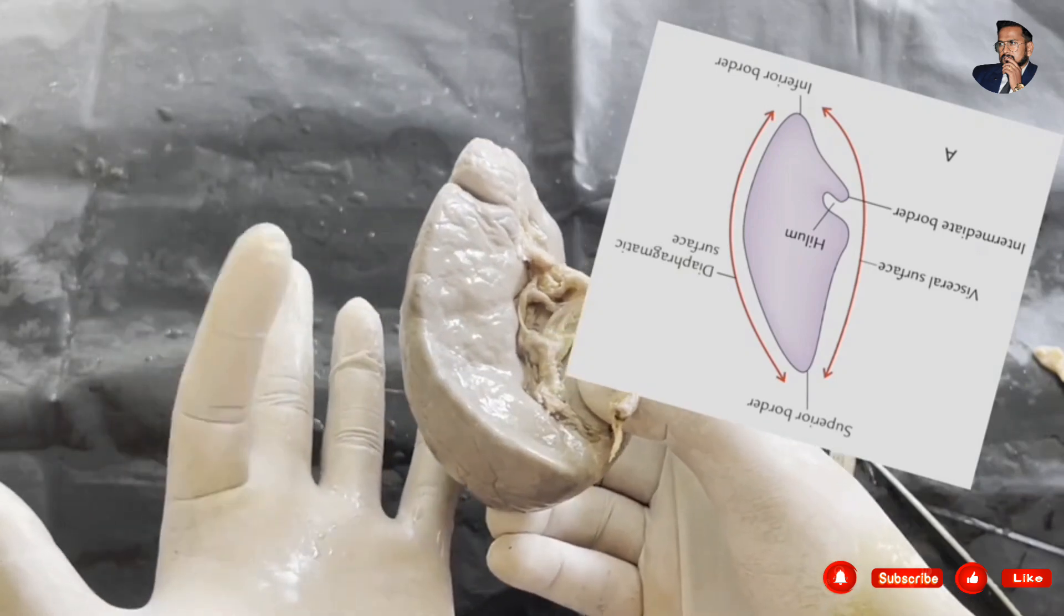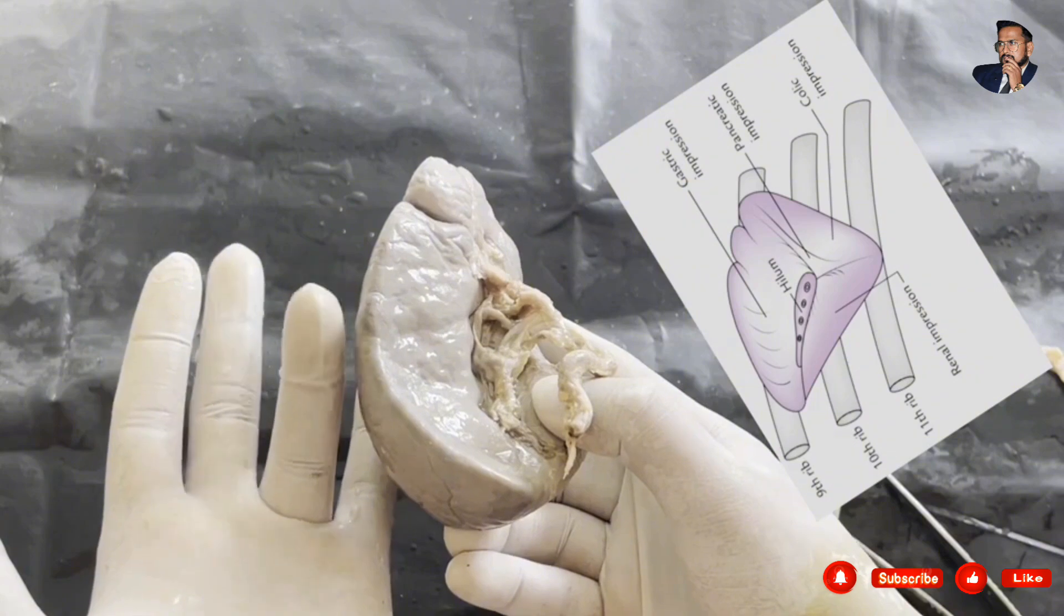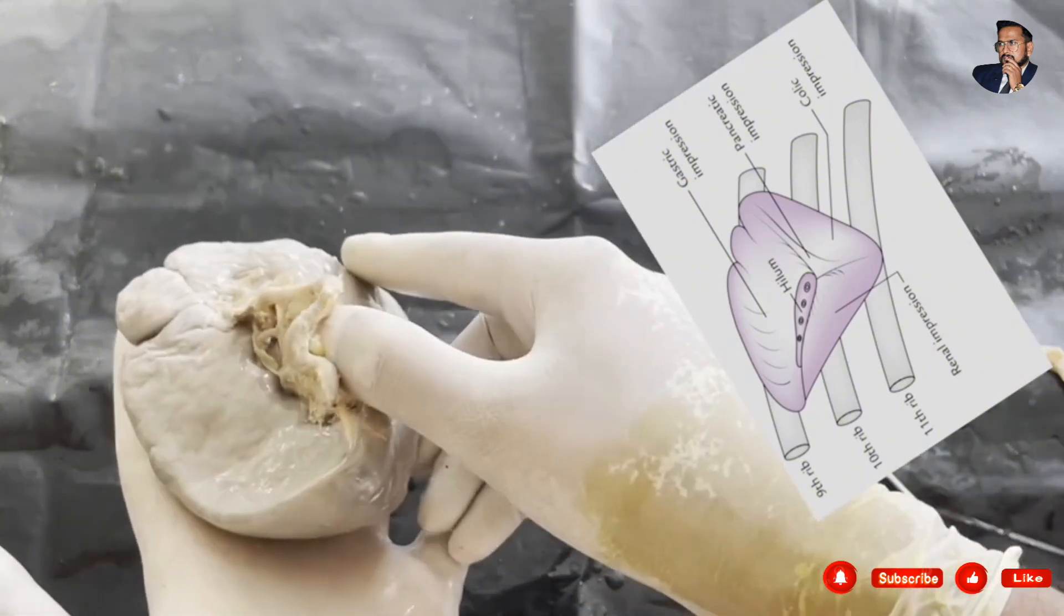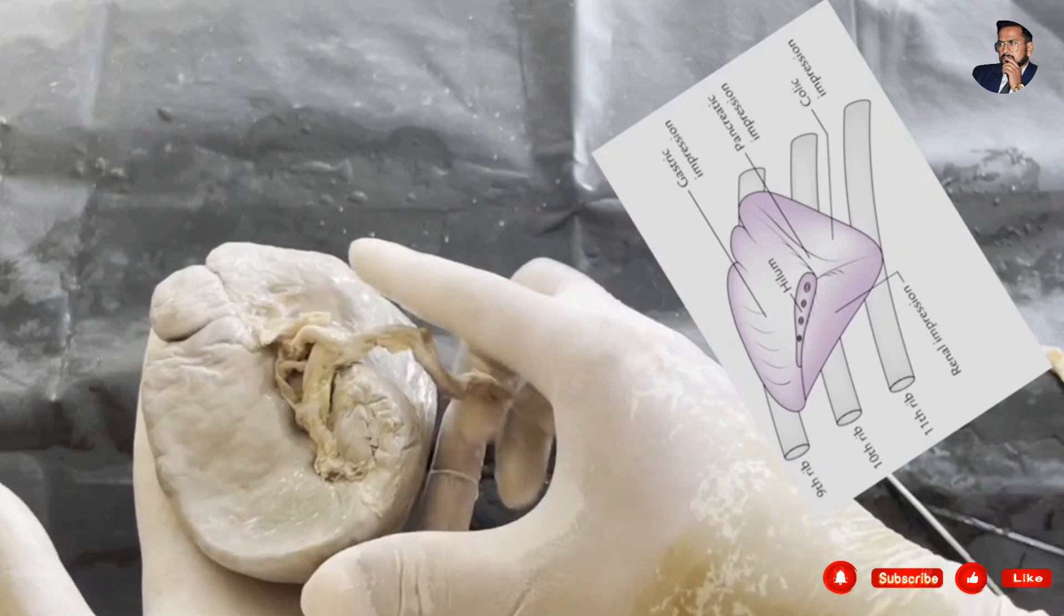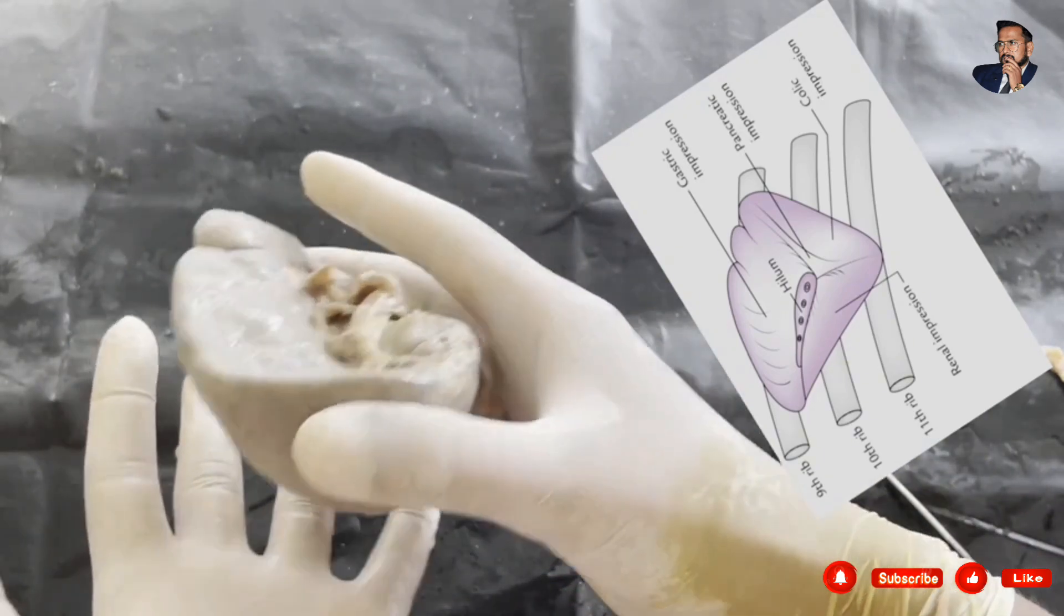Imagine that the index finger is the 9th rib, middle finger is the 10th rib, and ring finger is the 11th rib. Now let us place this spleen on the 9th, 10th and 11th ribs. It has relation with the diaphragm as well as with the 9th, 10th and 11th ribs.